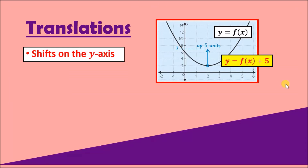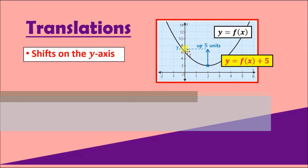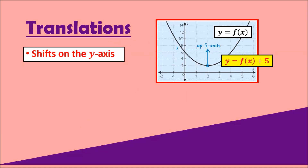Firstly we're going to look at translations — this is just another word for how the graph moves. The notation used is always in terms of f(x); they might use trig notations like sine, cosine, or normal polynomials like x², x³. For a y-axis shift: if you have f(x) and you write f(x) + 5, this means the curve goes up by five units — everything shifts up by five.